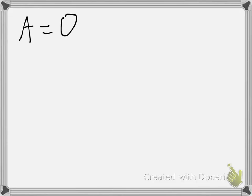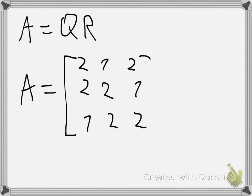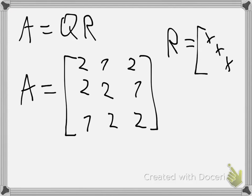Here I will do a QR factorization using the Householder transformation. So let's say I have the following matrix, and my goal is to find an upper triangular matrix, so there will be zeros throughout the lower part.